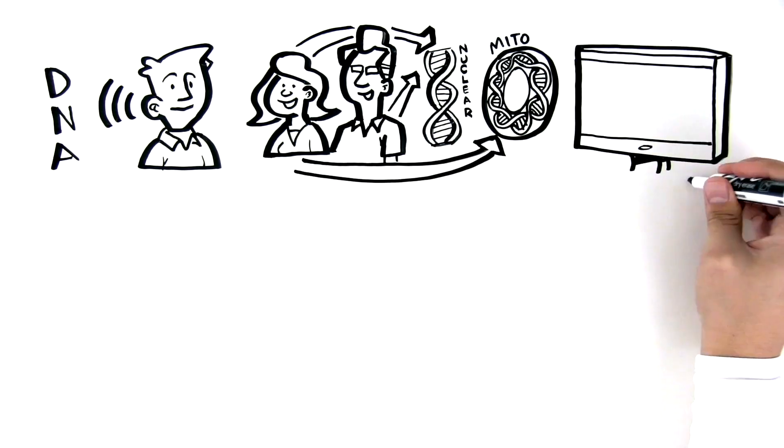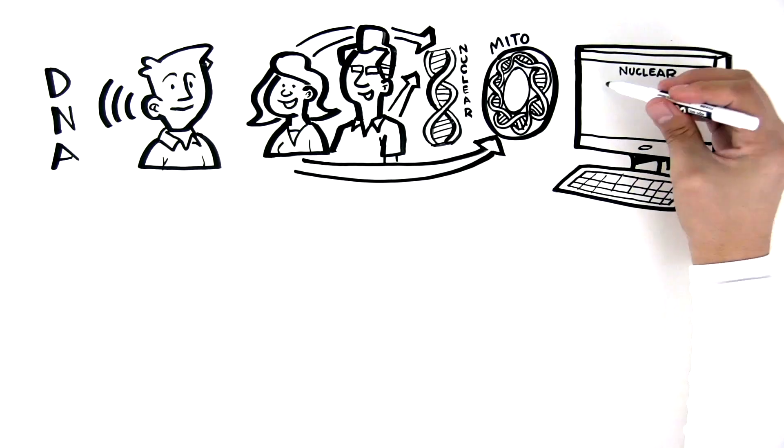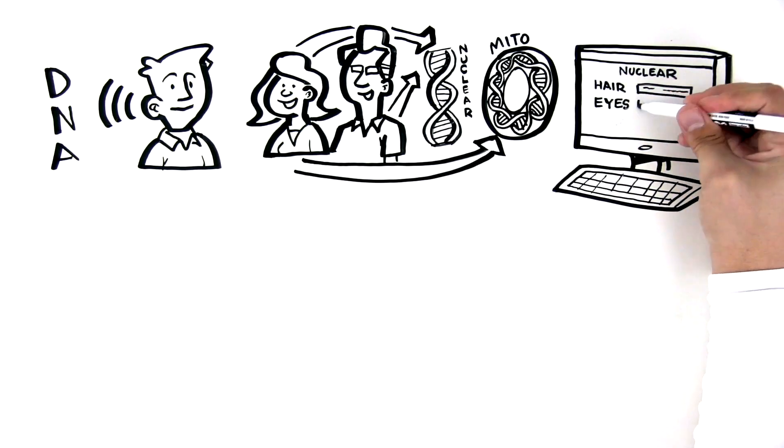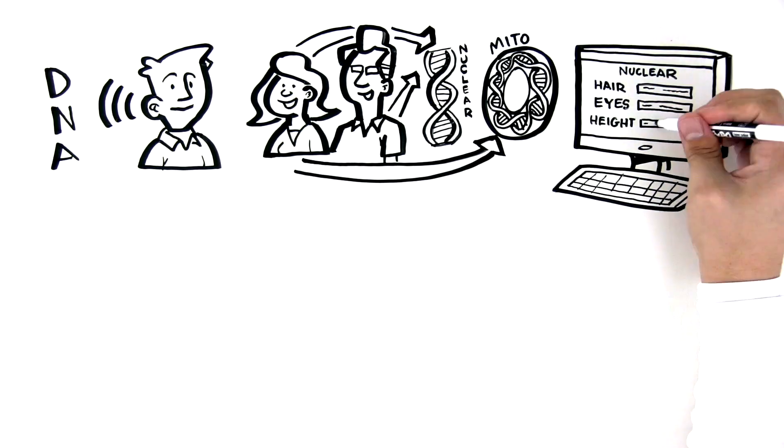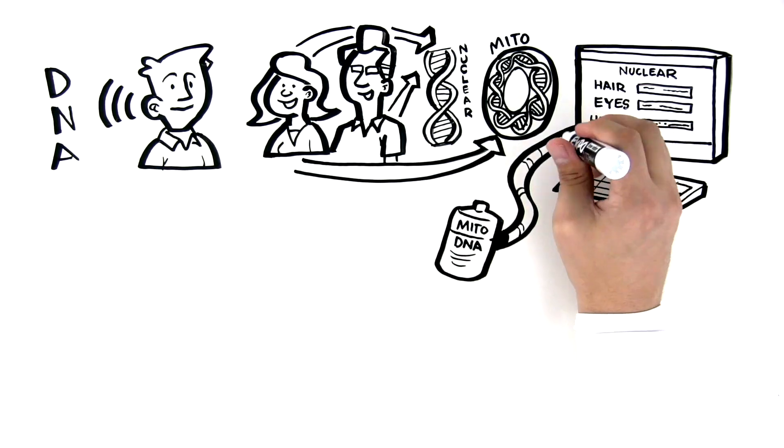These two types of DNA are like a computer. Nuclear DNA is the hardware. It determines the colour of our hair or eyes or how tall we are. Mitochondrial DNA is like the software. It powers the hardware and produces energy.